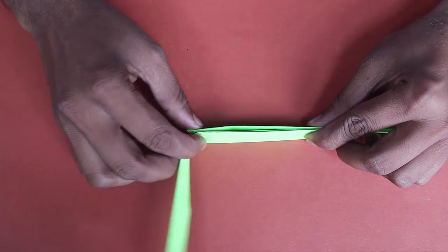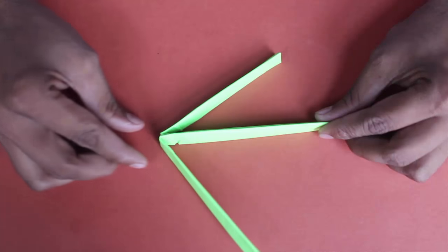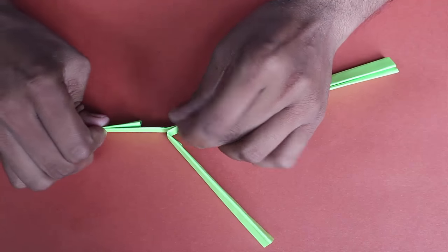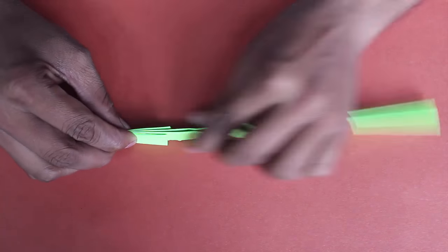Then fold both the cut portions outwards to make flaps. Now you can fold these flaps further to make clappers.